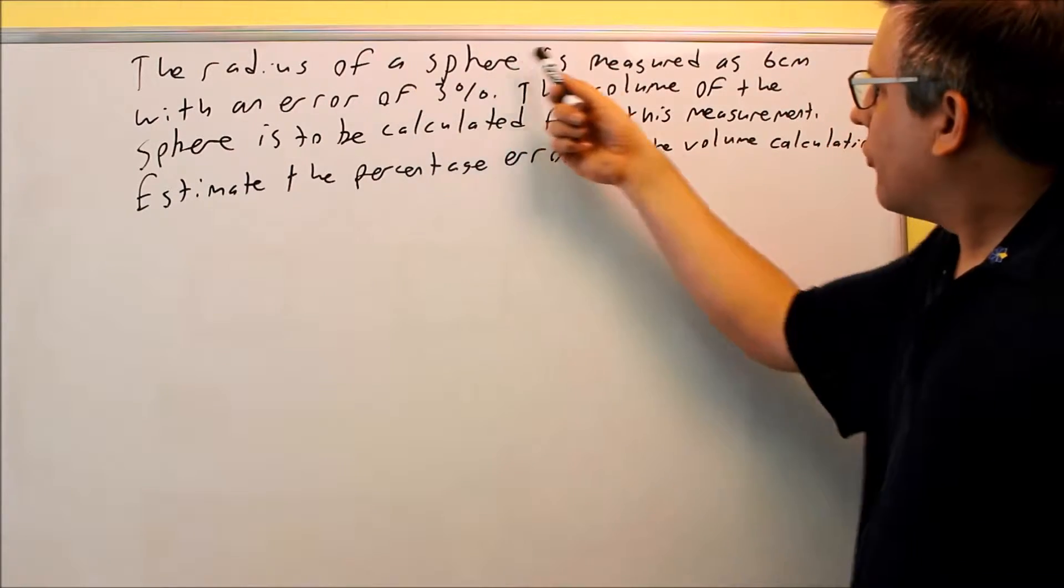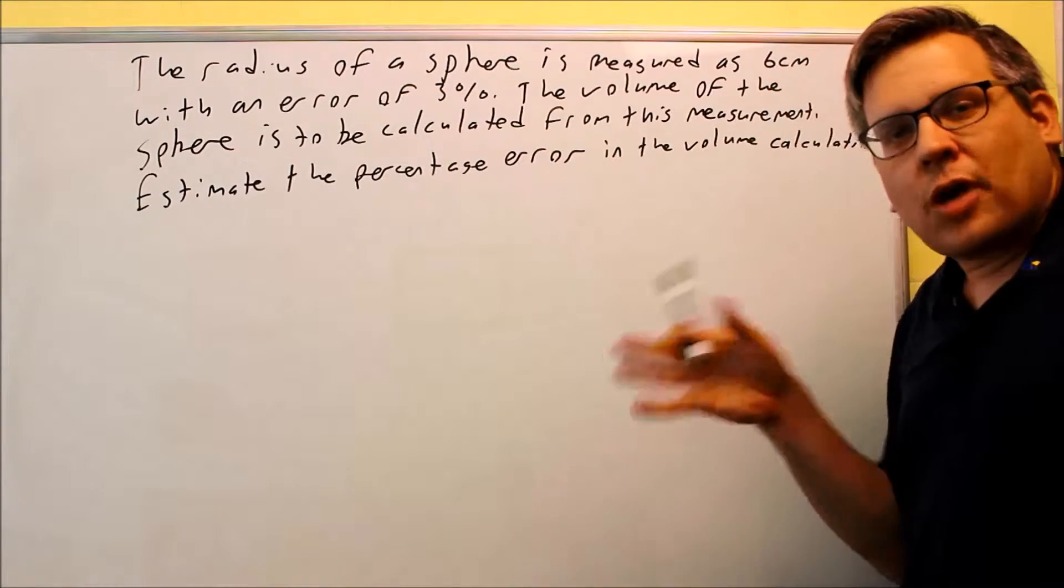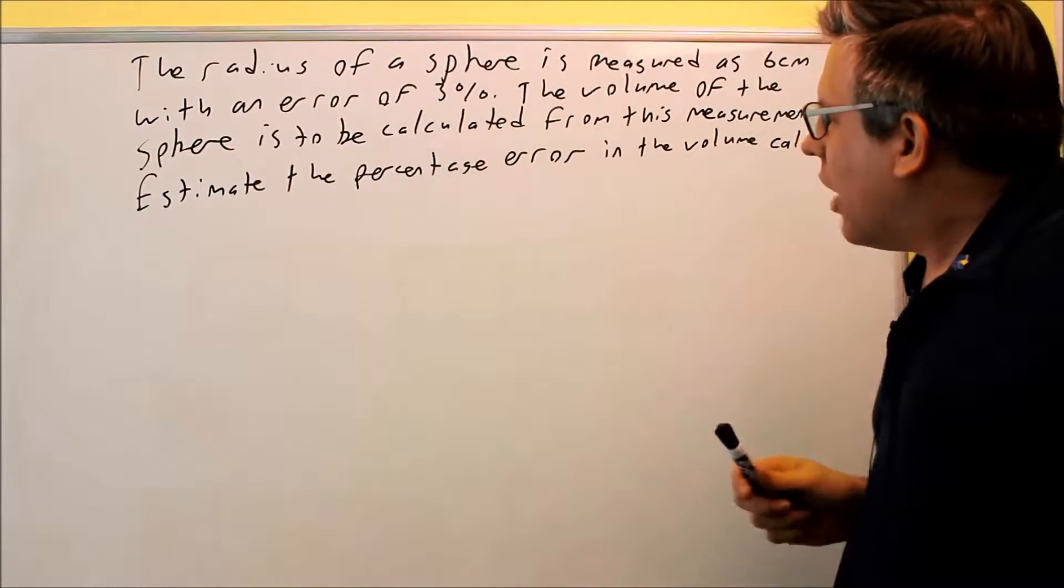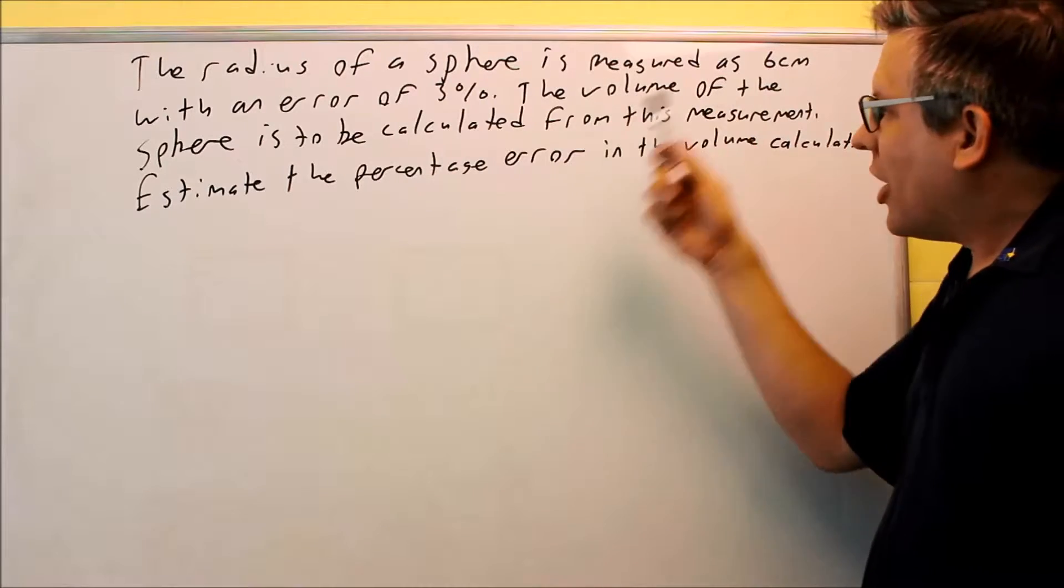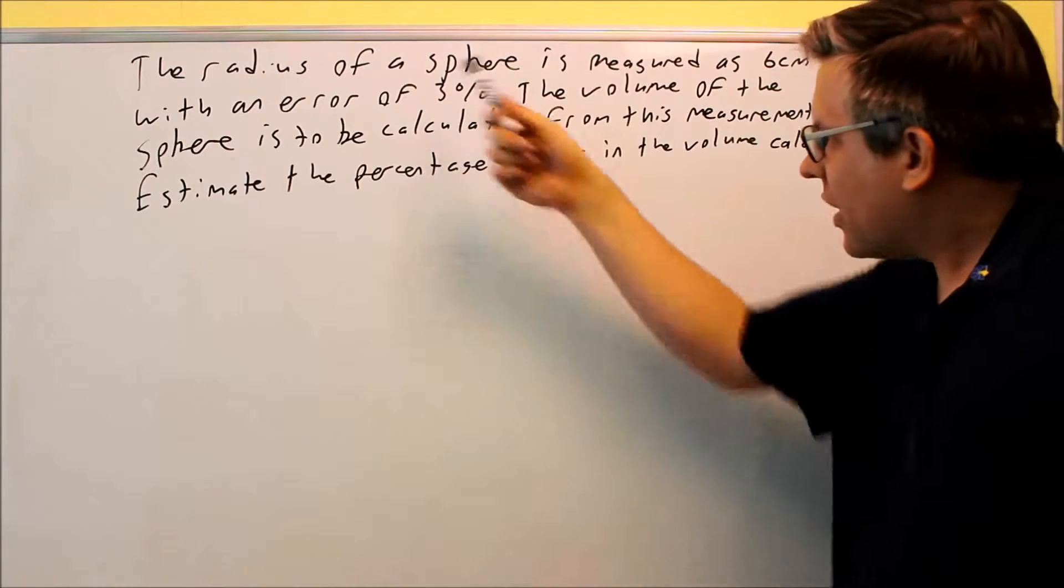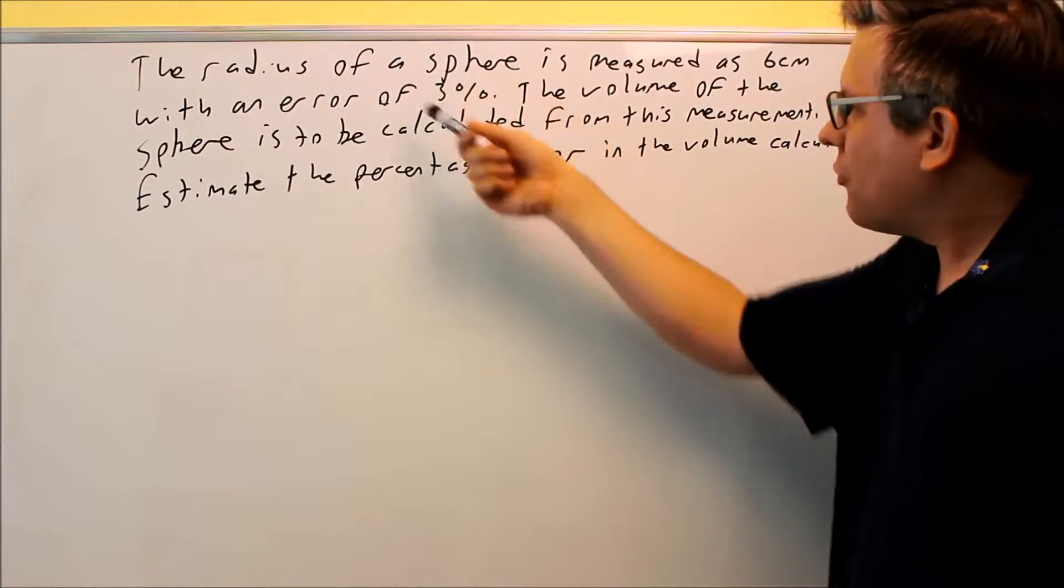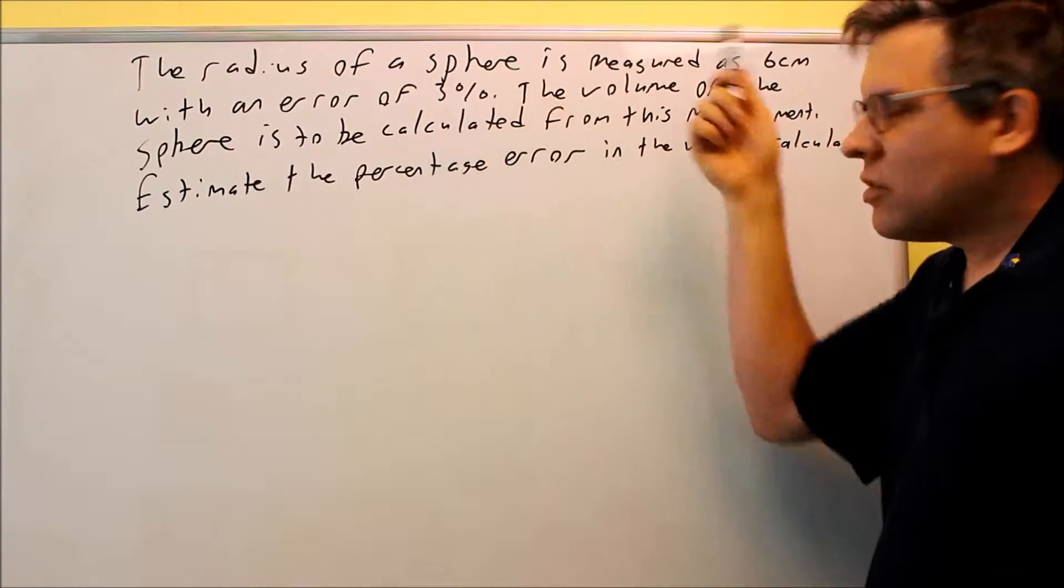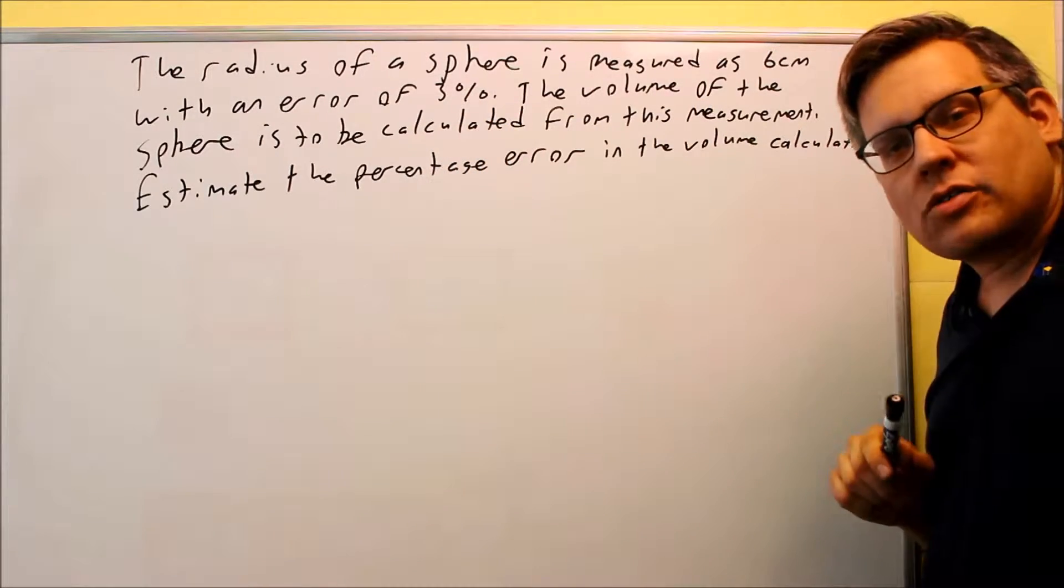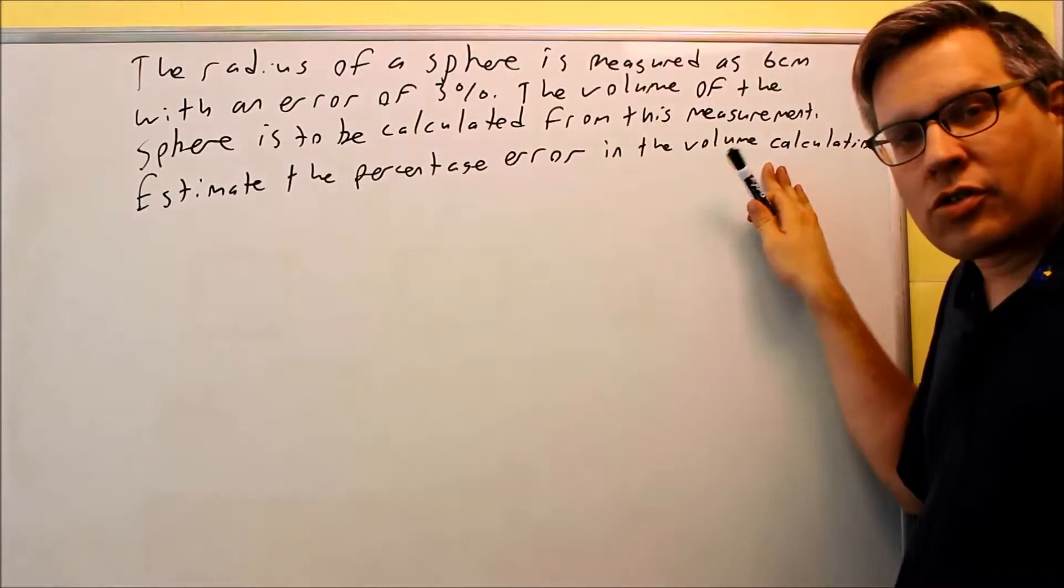We're given the radius of the sphere normally is 6 centimeters, and we have an error of 3%, which means our measurement might be off by 3%. The volume of the sphere is to be calculated from this measurement. Basically, what we're trying to figure out here is if I'm off by 3% when I measure the radius, what's that going to cause for percentage error in the actual volume calculation?